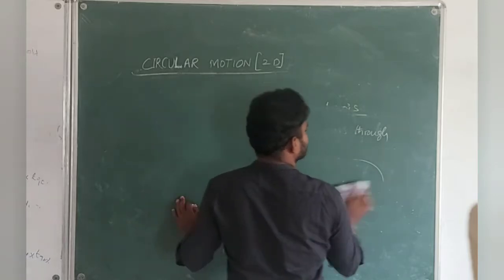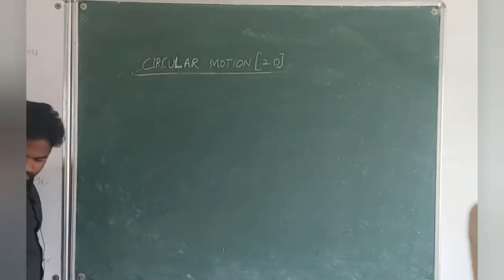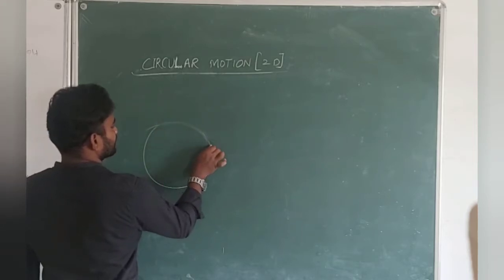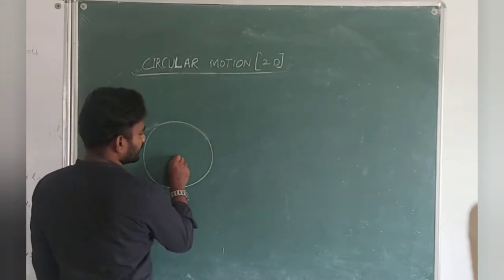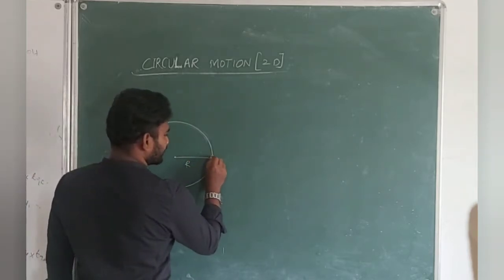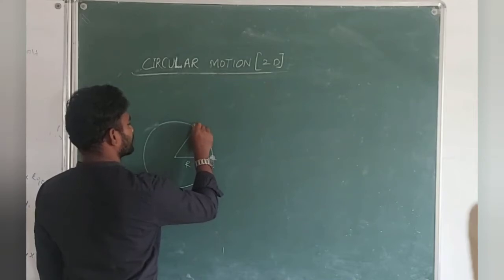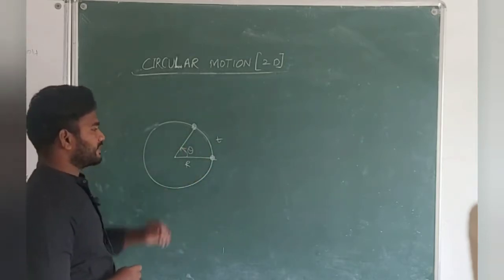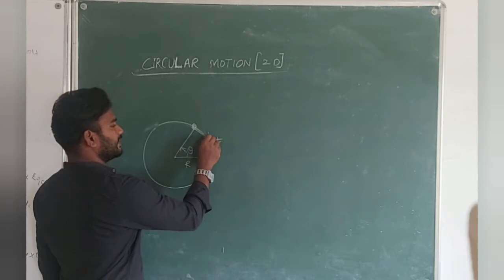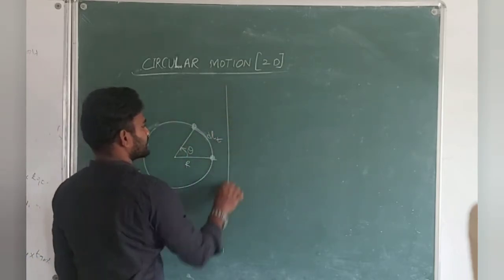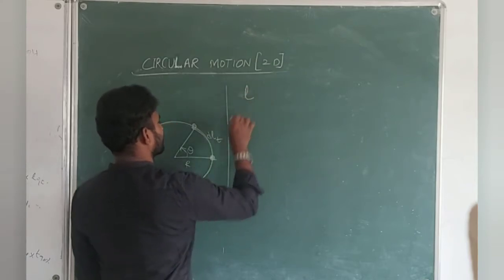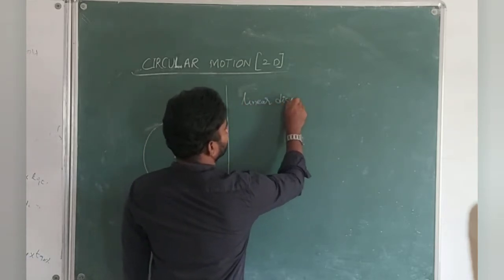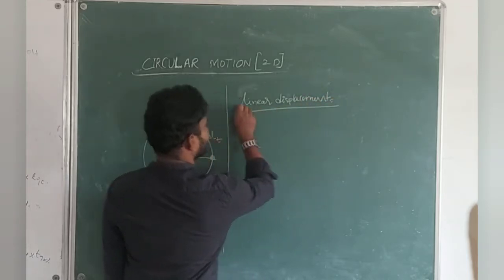Now let's discuss the things we are going to cover in circular motion one by one. The first thing: let me consider a circular path. The object starts at a point and after some time moves to another point, covering angular displacement theta and arc length dl. This arc length is called linear displacement, denoted by l or dl.